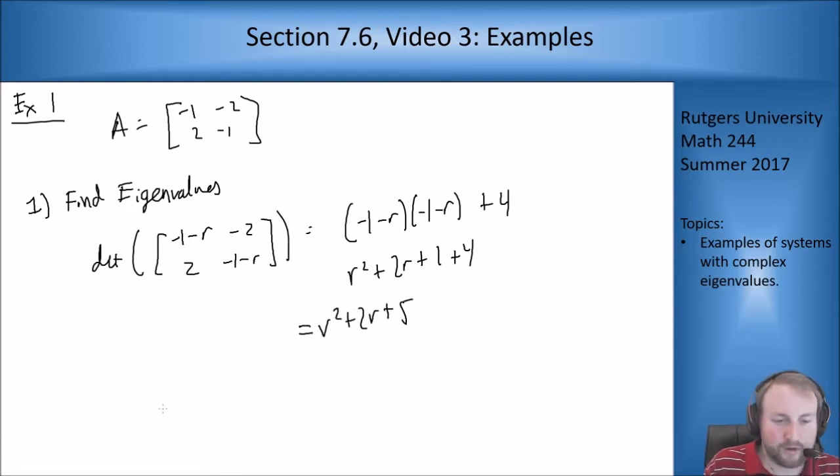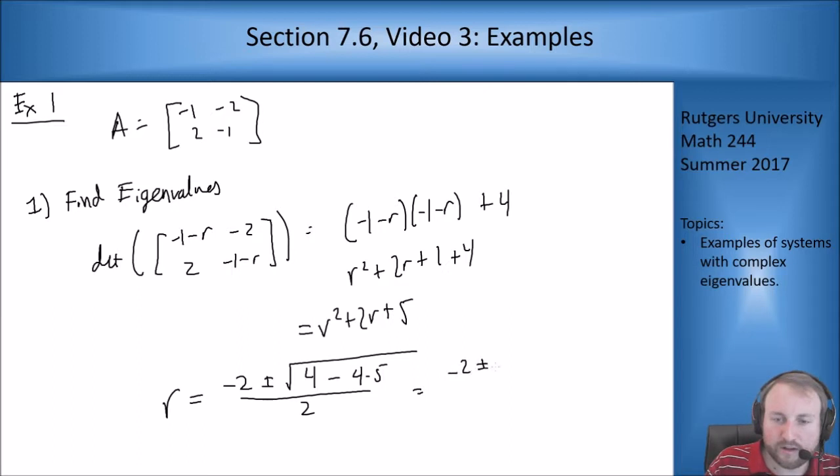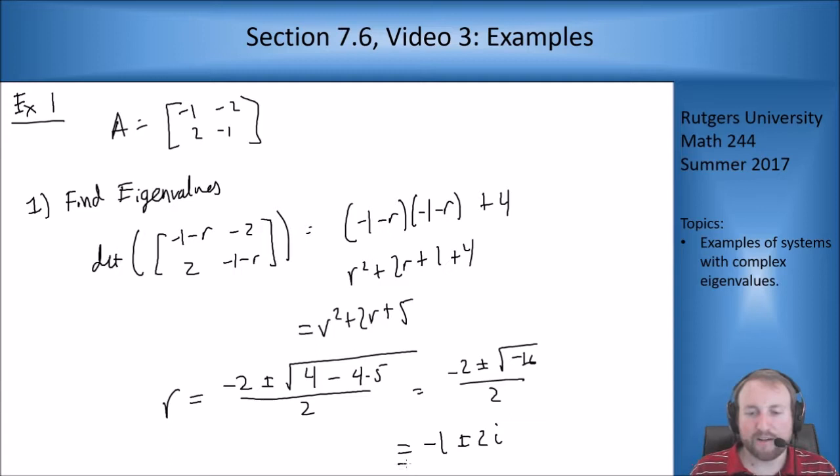Now we're going to throw in the quadratic formula. r equals negative 2 plus or minus the square root of 4 minus 4 times 5 over 2, negative 2 plus or minus the square root of negative 16 over 2, which is going to be negative 1 plus or minus 2i. So eigenvalues are negative 1 plus or minus 2i.